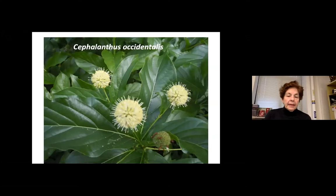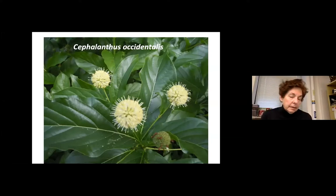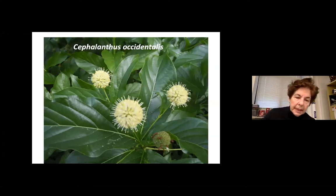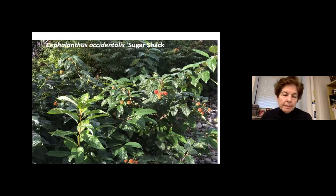Another plant we really like is Cephalanthus occidentalis (buttonbush). This is an obligate wetland plant, but interestingly it also tolerates dry soil reasonably well — we've had no mortality of Cephalanthus on this site. We use a smaller variety called Sugar Shack, which has red button flowers, because we don't want as much biomass as the straight species produces.